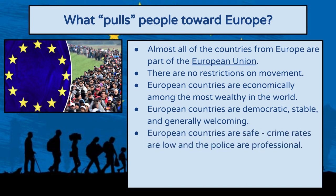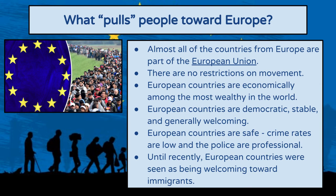European countries are also safe — they have low crime rates, and the police forces are professional, not corrupt, and respectful towards the population for the most part. European countries are seen as welcoming towards immigrants. This is starting to change because Europe has been overwhelmed with immigrants, but Europe is still a very progressive place that is appealing towards immigrants and is better than a lot of other options immigrants could choose.